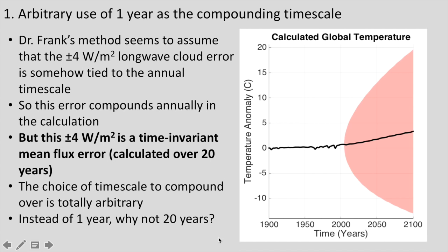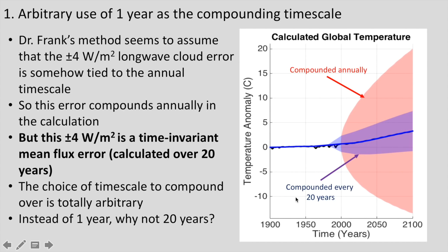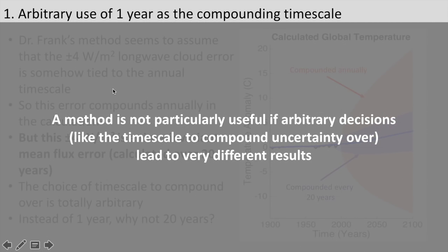The choice of timescale to compound over is actually totally arbitrary for this number. You could compound it over one second, or over 20 years — the timescale it was actually calculated over. If you compare uncertainty ranges from compounding annually versus compounding every 20 years, you get much smaller uncertainty ranges when compounding over 20 years. The point is that a method is not particularly useful for quantifying uncertainty in a climate model projection if arbitrary decisions — like the timescale to compound over — lead to totally different results.